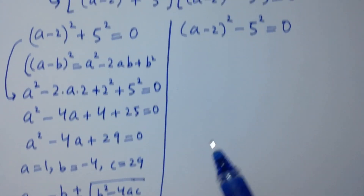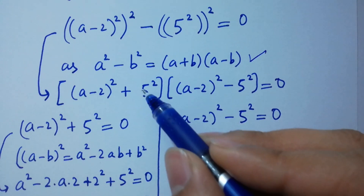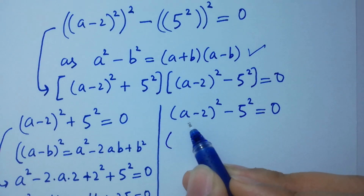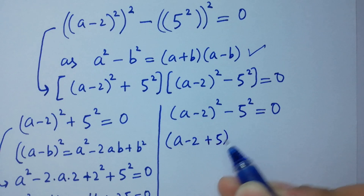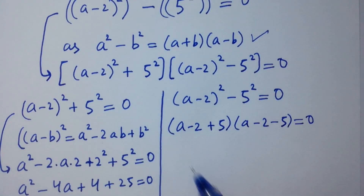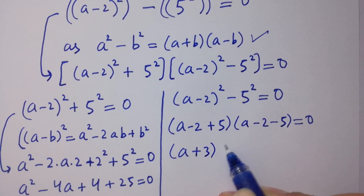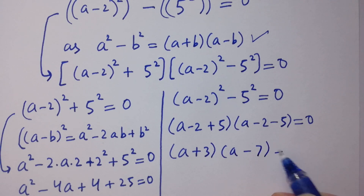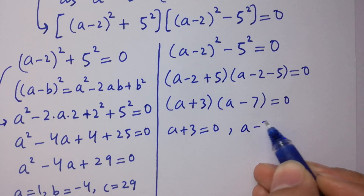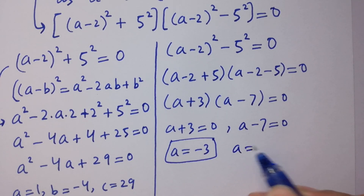For the second factor, (a minus 2) squared minus 5 squared equals 0. Applying a squared minus b squared equals (a plus b)(a minus b), we get (a minus 2 plus 5)(a minus 2 minus 5) equals 0, which is (a plus 3)(a minus 7) equals 0. So either a plus 3 equals 0 giving a equals minus 3, or a minus 7 equals 0 giving a equals plus 7.